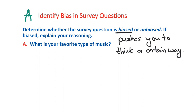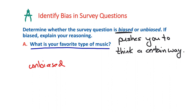Identifying bias in survey questions. Bias pushes you to think in a certain way — you see it all the time in the news, marketing, or politics. For example, 'What is your favorite type of music?' is unbiased because it does not lead you toward any particular response and is not pushing or encouraging you to respond a certain way. It's a straightforward question with no alternative motives.